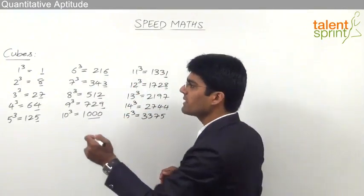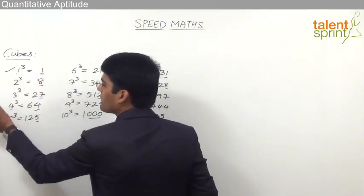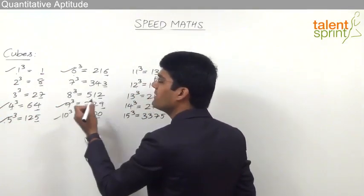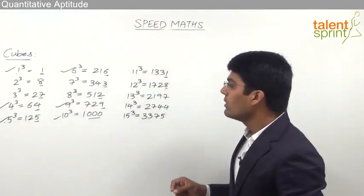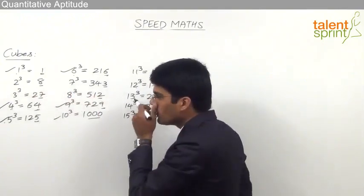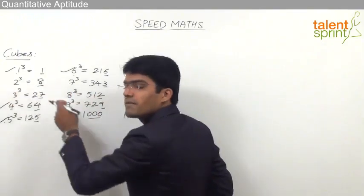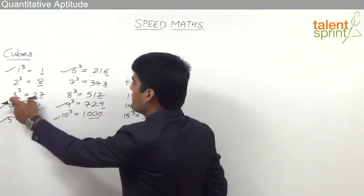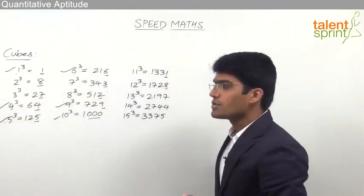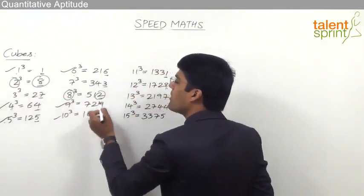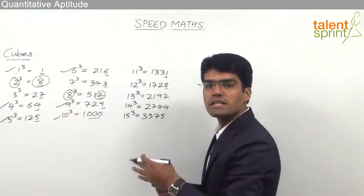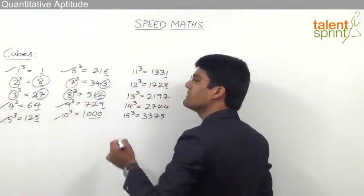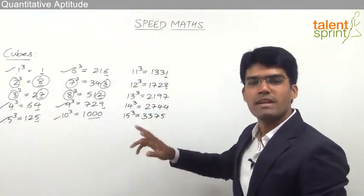The pattern is very simple: for 1 we have 1, 4 gives 4, 5 gives 5, 6 gives 6, and 9 gives 9 in the units place of the cube root. The only changes are in case of 2, 3, 7, and 8. When a number ends with 8, cube root ends with 2; when a number ends with 2, cube root ends with 8. Similarly, when a number ends with 7, cube root ends with 3; and when a number ends with 3, cube root ends with 7.